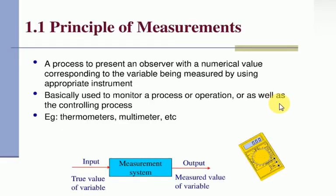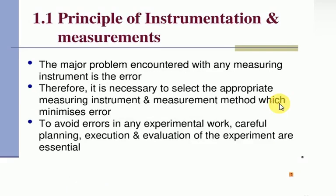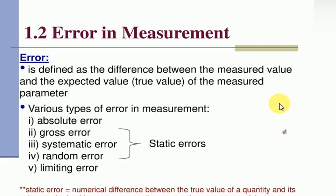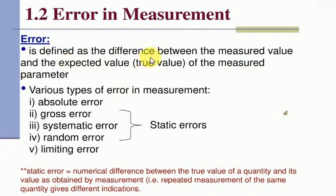Principle of measurements input output, error in measurement. Error is defined as the difference between the measured value and the expected value of the measured parameter. Types of error: absolute error, gross error, systematic error, random error, and limiting error.